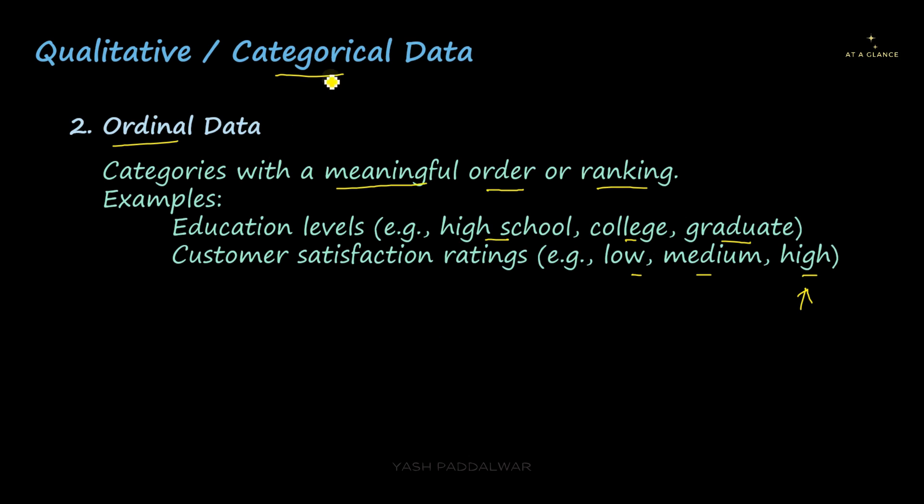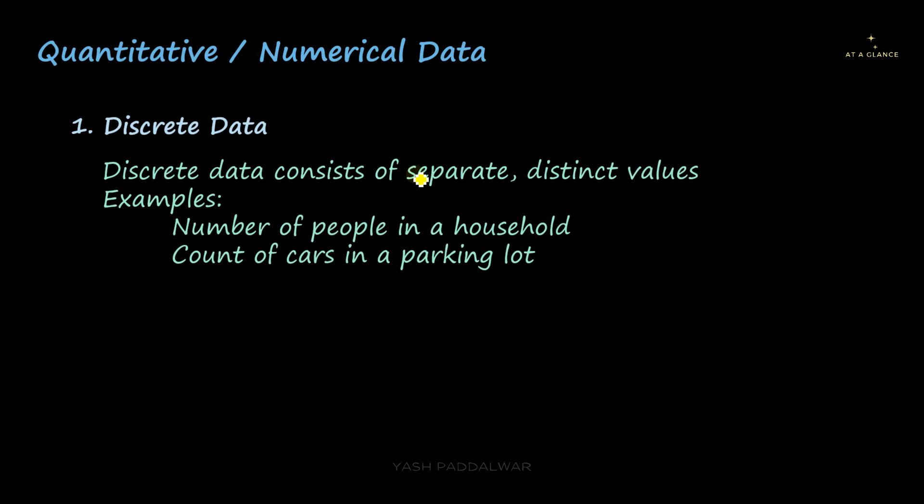Now we have seen the two types of categorical data. We'll move on to the next type: numerical data, which is also called quantitative data. Under numerical data, as we have seen in the tree structure, first is discrete data and second is continuous data. First, let's have a look at discrete data.